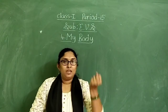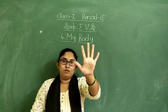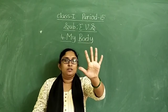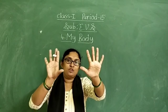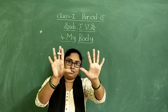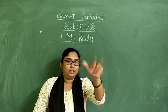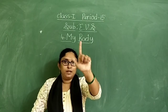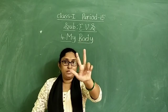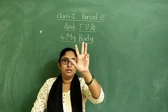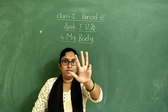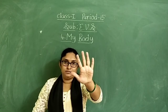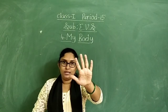In each hand we have five fingers. In two hands we are having ten fingers. Thumb finger, index finger, middle finger, ring finger, little finger.